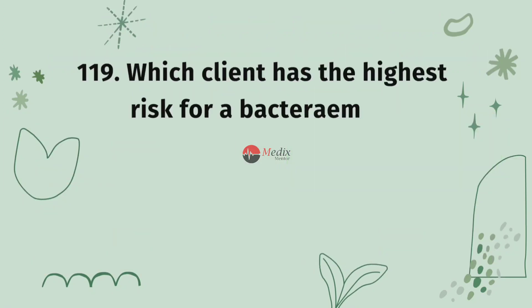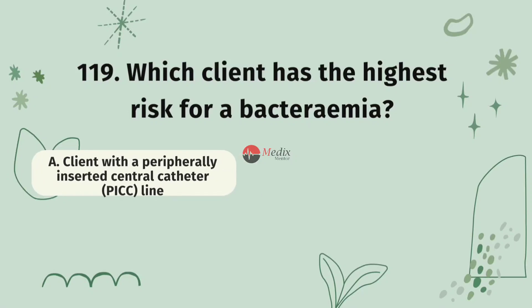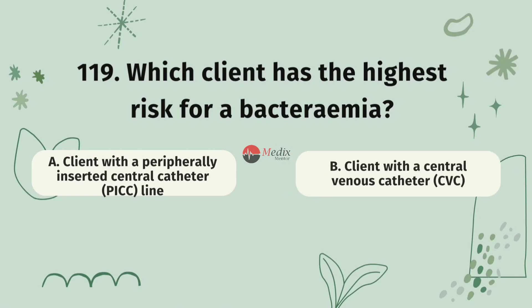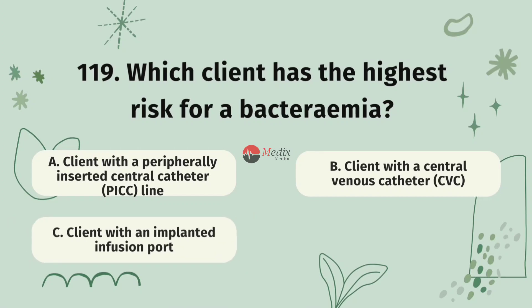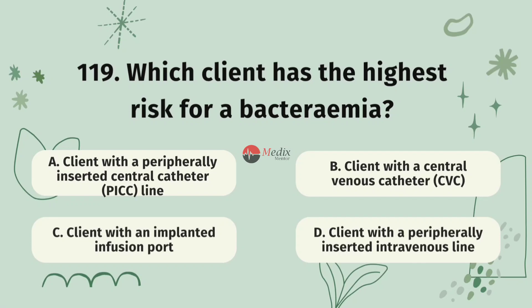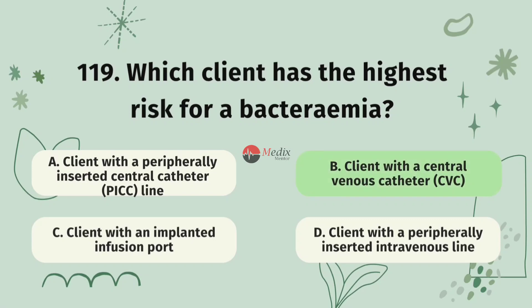Question 119. Which client has the highest risk for bacteremia? Option A, client with a peripherally inserted central catheter (PICC line). Option B, client with a central venous catheter (CVC). Option C, client with an implanted infusion port. Option D, client with a peripherally inserted intravenous line. The correct answer is B.